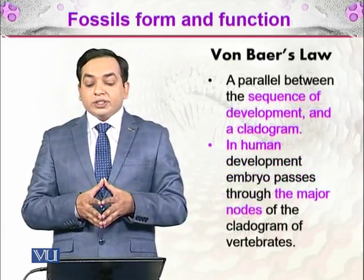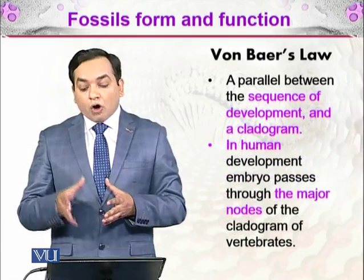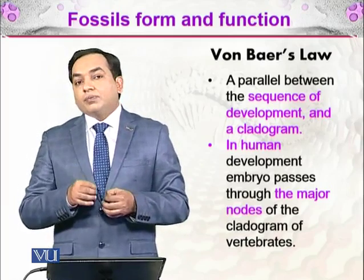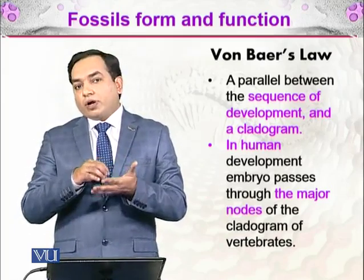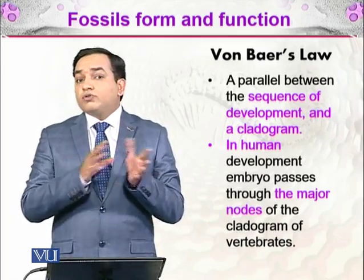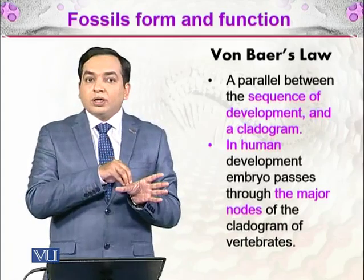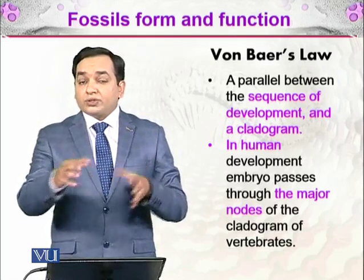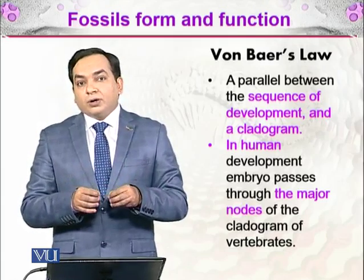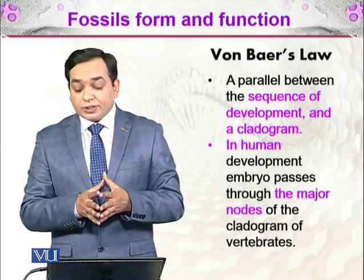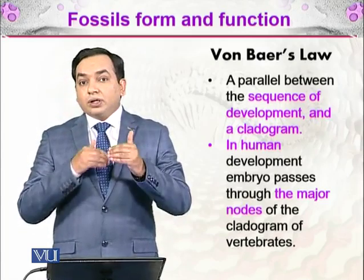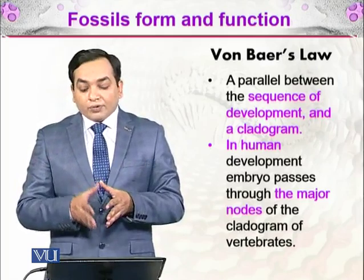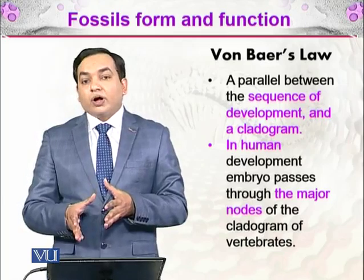Another scientist, Von Baer, proposed Von Baer's law, which states that a parallel exists between the sequence of development and the cladogram. As we discussed in cladistics, in a cladogram the chordates come first, then the vertebrates, and within vertebrates there are tetrapods and so on. In human development, the embryo passes through the major nodes of the cladogram of vertebrates, with organisms having their apomorphies and synapomorphies.